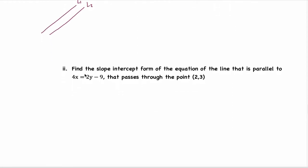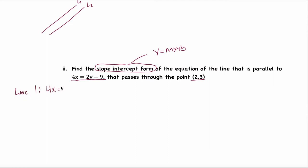Here's an example: find the slope-intercept form of the equation of the line that is parallel to a given line and passes through a given point. We have two different lines. Line 1 has the equation 4x equals 2y minus 9. But that's not what we want — we want to know about Line 2. We don't have the equation of Line 2, but our goal is to come up with it.